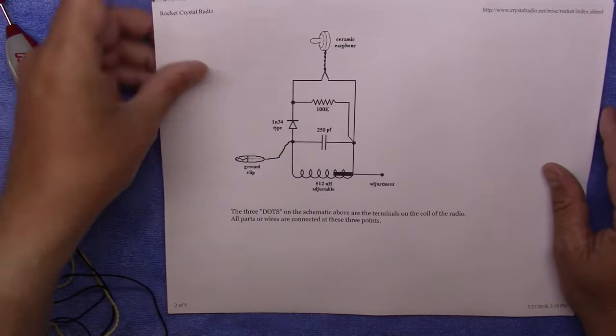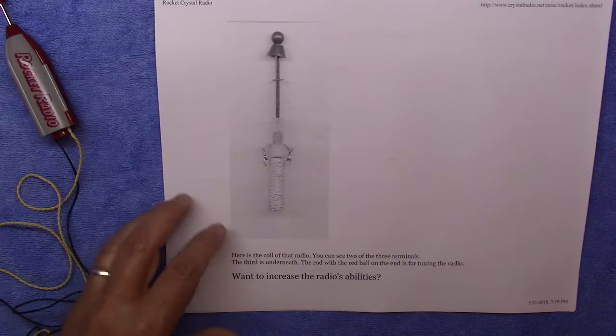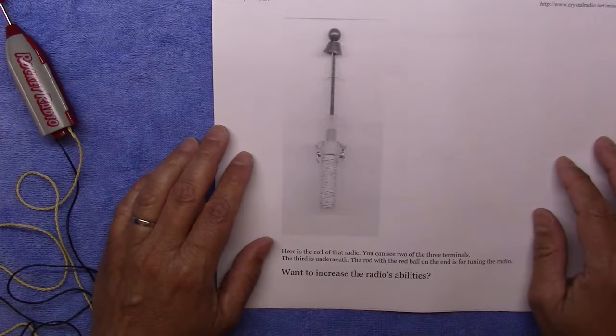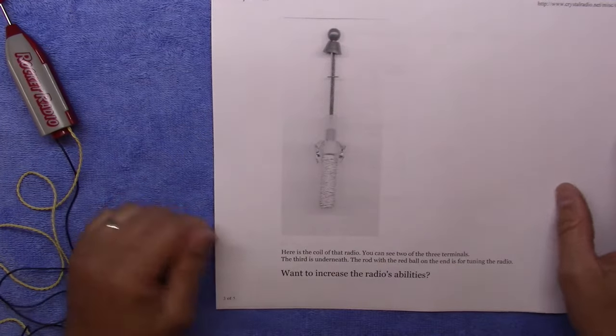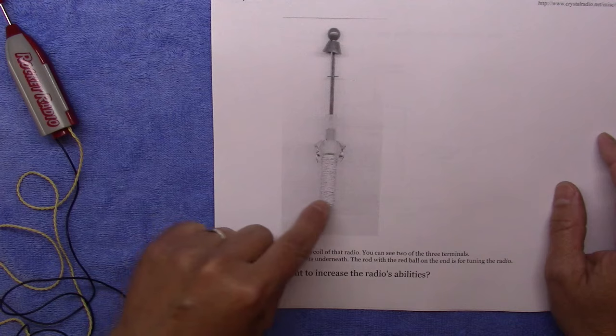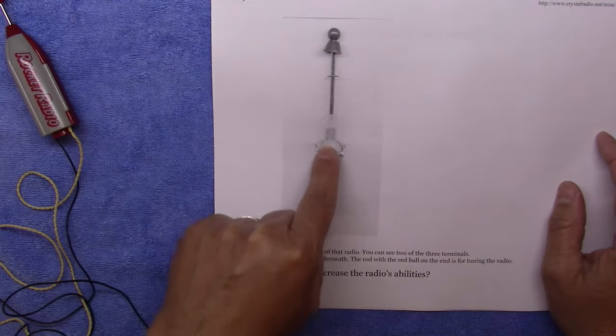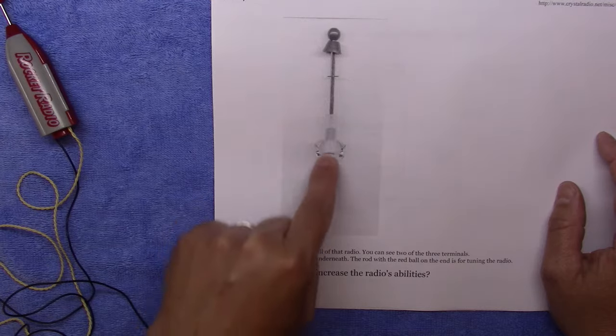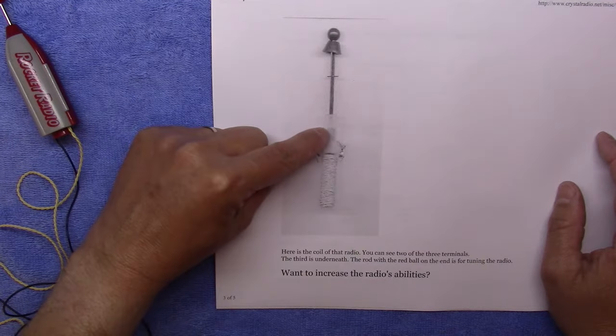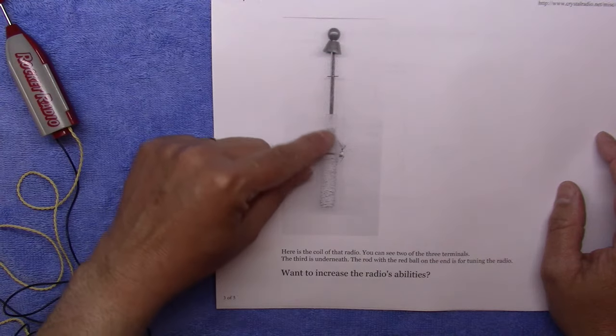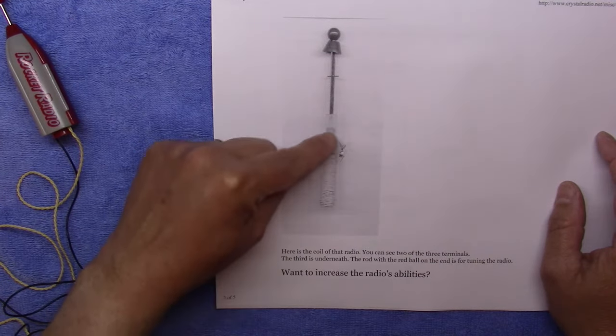So that's pretty much the schematic of a very, very basic crystal radio. And I thought this photo here was interesting. I don't know how well this is coming out. I was only able to print in black and white. But basically you have that 512 microhenry inductor here. And then at the end of the stick or the shaft you've got that ferrite material that just pushes through it.